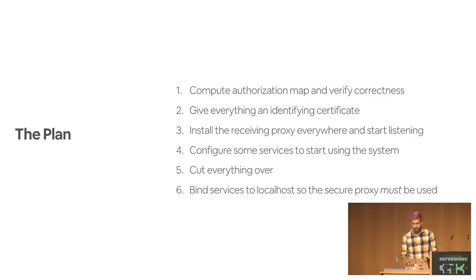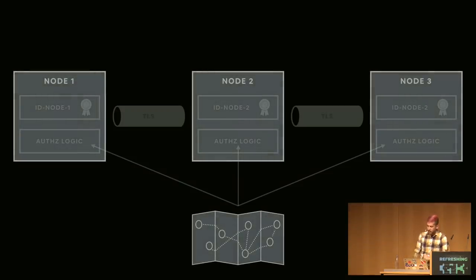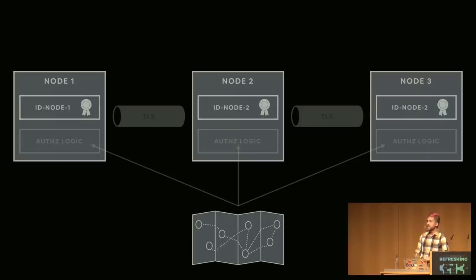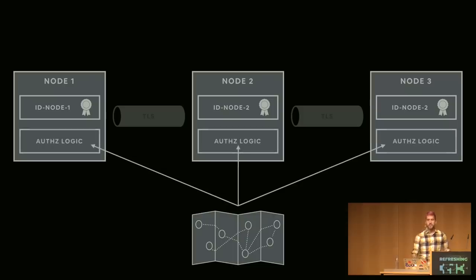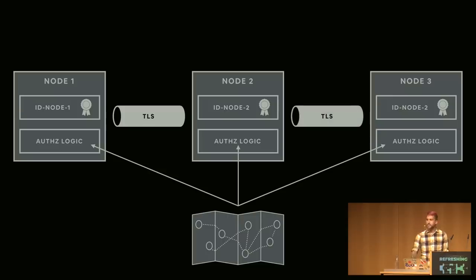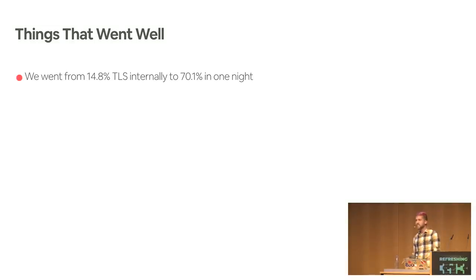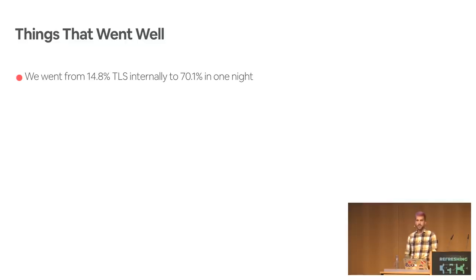We did this in April of this year. We went from about 15 percent internal TLS usage to 70 percent in one evening, which was really awesome and something I don't think would have been possible with any other scheme. We made sure there were plenty of non-security benefits — much easier configuration since we were automatically assigning identities and pre-configuring certificates, performance improvements, and a ton more metrics for greater observability. We also made sure we could disable TLS routing for individual services so that if one had a problem, we didn't have to roll everything back.